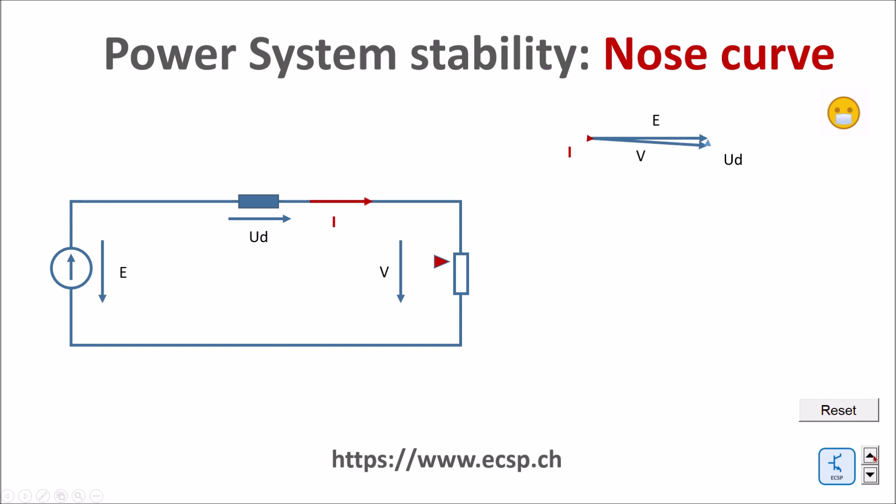If we now start to increase the load, meaning decrease the resistance, you see how the angle between the voltage at the load and the voltage at the source start to increase. Because we have now suddenly a voltage drop across XT. And that means that the current, because the current is increasing.